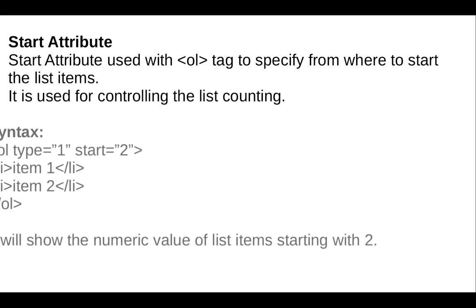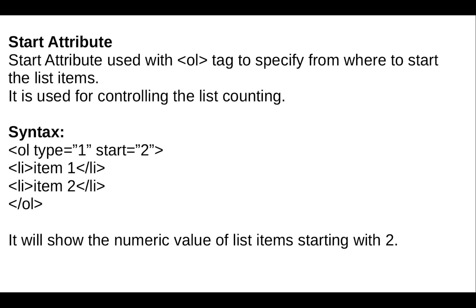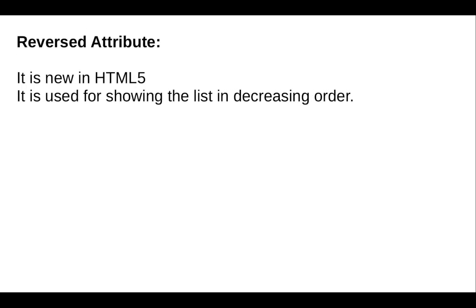The start attribute is used with the ol tag to specify from where to start the list items. It is used for controlling the list counting. In the syntax, we open the ol tag, then add the type attribute and start attribute with their respective values, then add list items and close the ol tag.